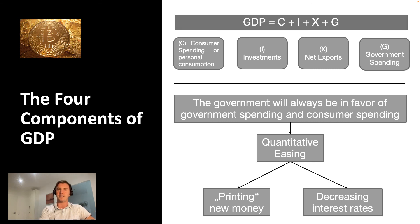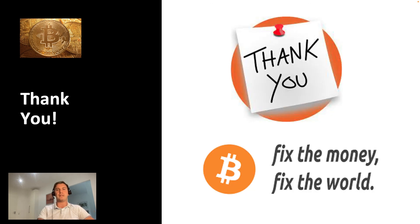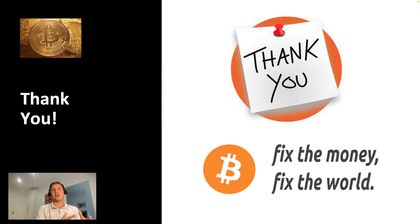With Bitcoin as money, there would never have been the crisis of 1929 or 2008, because the credit could not have been extended — there is no way to print more Bitcoin beyond what is programmed. Already around 90-91% of all Bitcoin have been mined. This video should help you understand what is wrong with having deflationary technology but inflationary money.